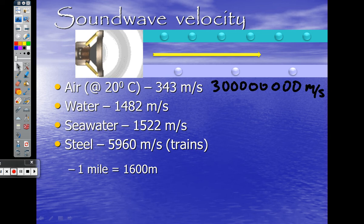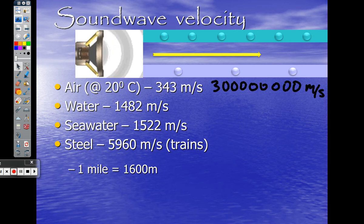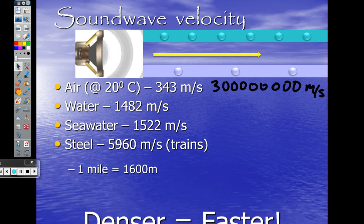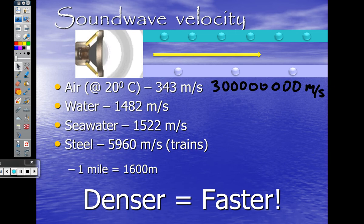Let's look at the trend. We have air at 20 degrees Celsius — 343 meters per second. Depending on temperature and humidity this will change a little, but we'll stick with 343 for air. Water is 1482, seawater is 1522, and steel is 5960. So velocities are increasing. Why? It gets more dense. As density increases, velocity also increases — the denser the material, the faster sound travels.